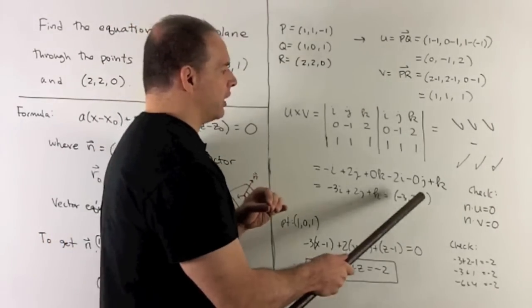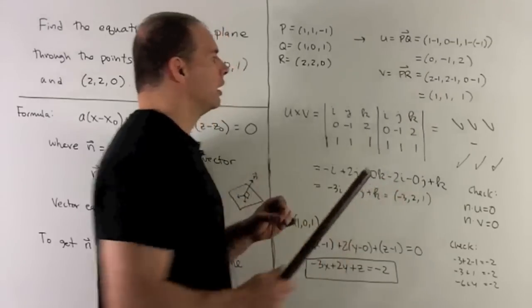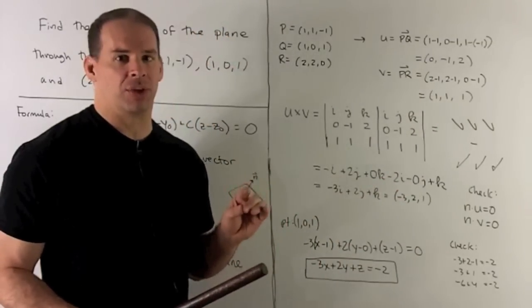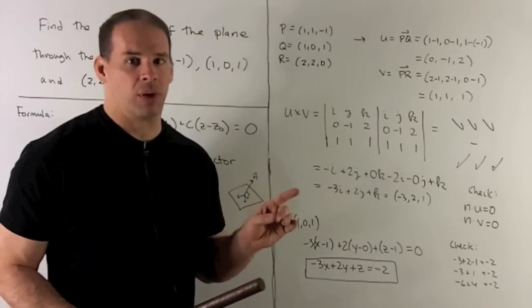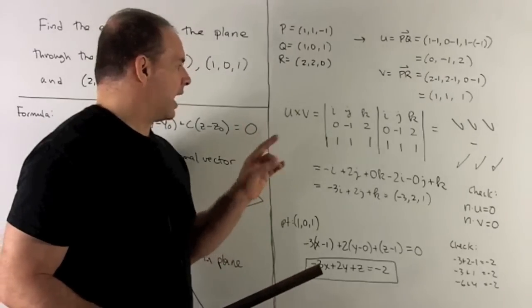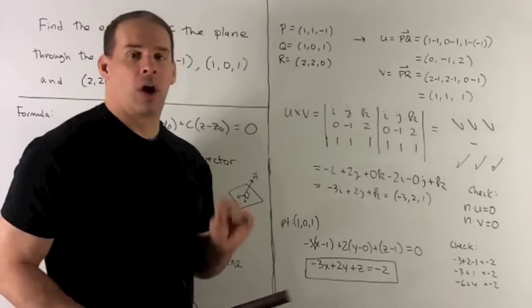if I took (-3, 2, 1) against (1, 1, 1), it's going to be -3 + 2 + 1. That equals zero, so V and what we're calling N are going to be perpendicular.